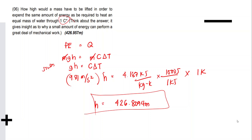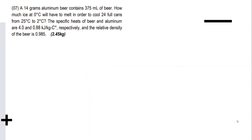So this is our final answer. Next problem: a 14-gram aluminum beer can contains 375 mL of beer. How much ice at 0°C will have to melt in order to cool 24 cans from 25°C to 2°C? The specific heats of beer and aluminum are 4 and 0.88 kJ/kg·°C respectively, and the relative density of the beer is 0.985.